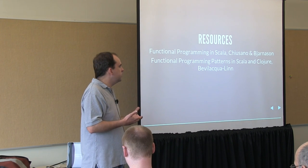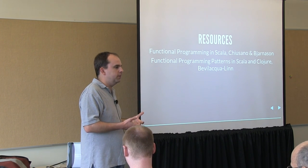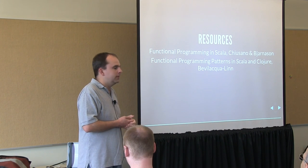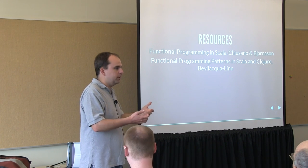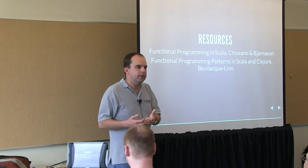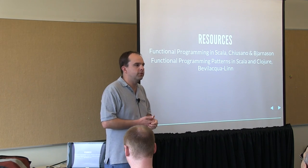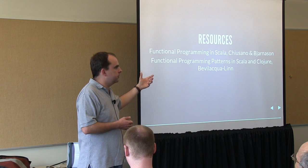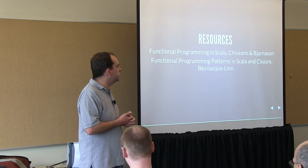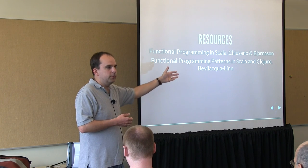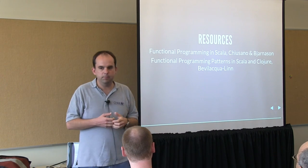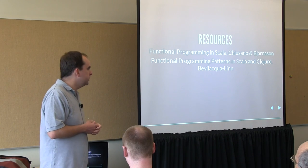In Functional Programming Patterns, each chapter is an example of something we would have done in the object-oriented Java world, and then he shows how to implement it in Scala and how to implement it in Clojure. It's a great way to get a general introduction and also to compare the two languages since you get a solution in both.